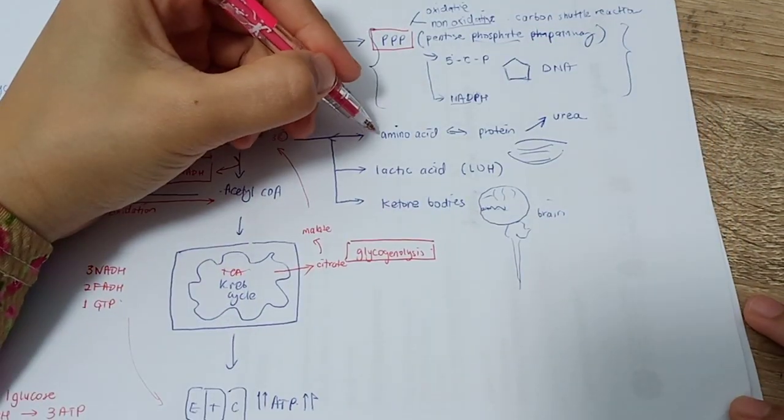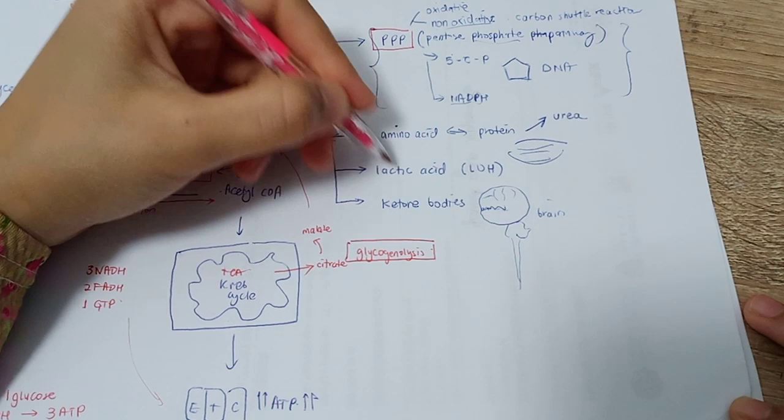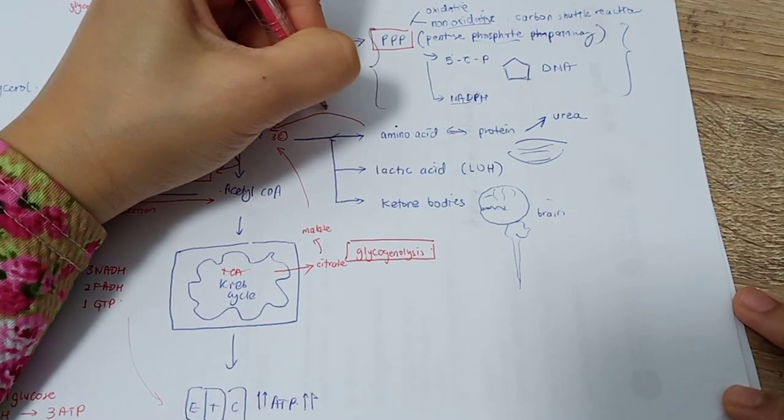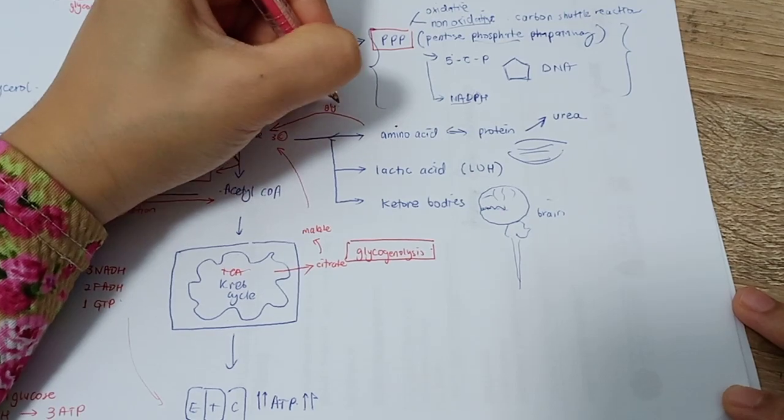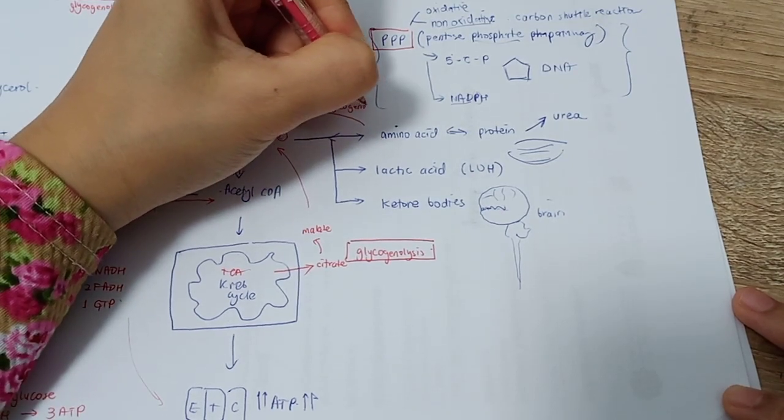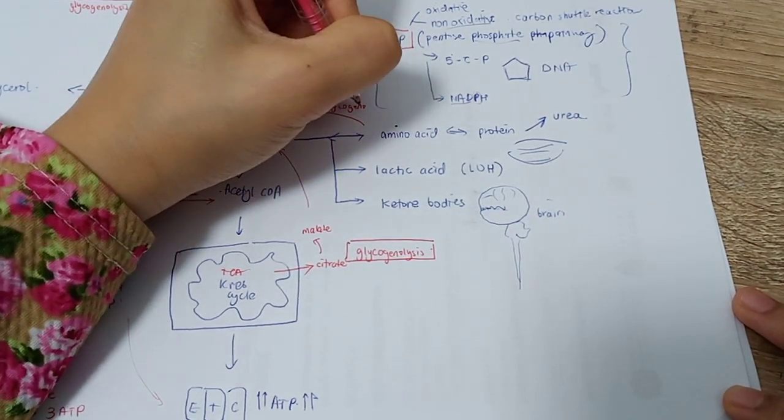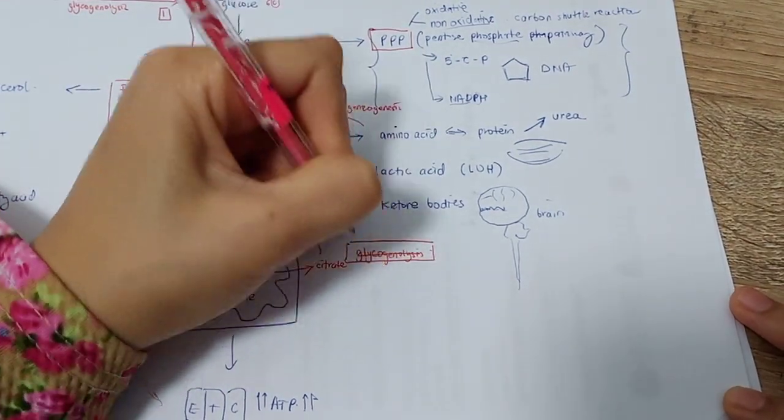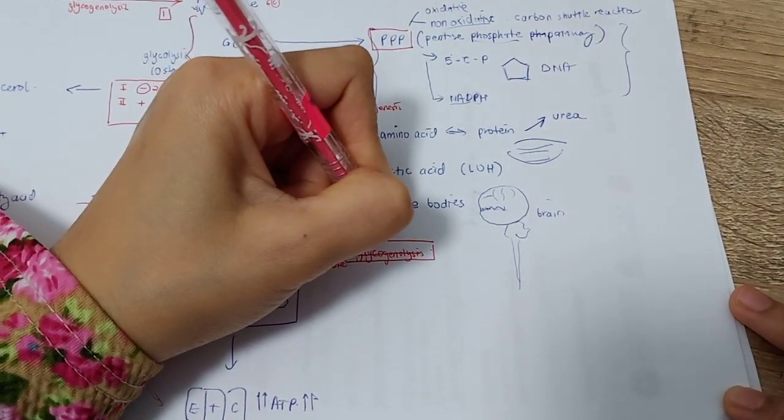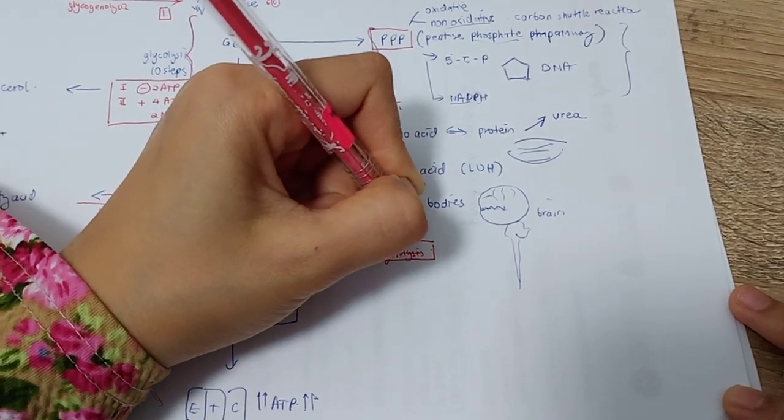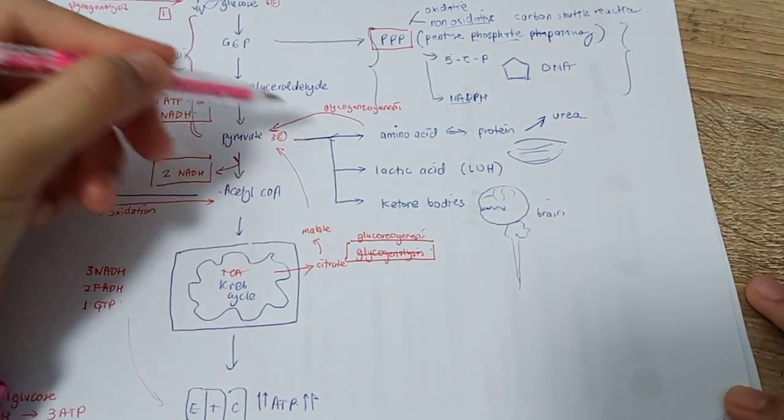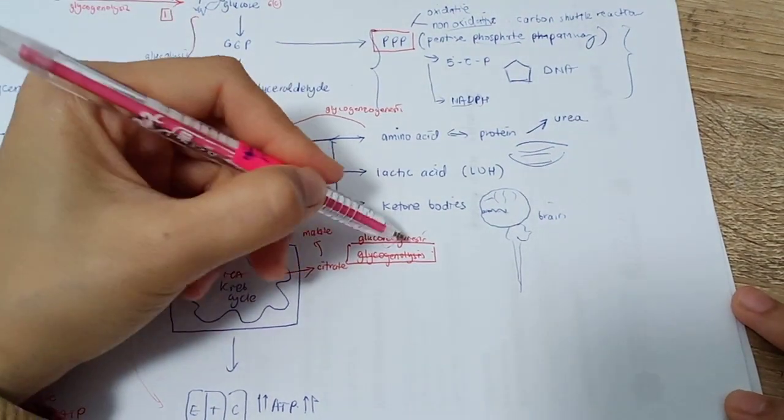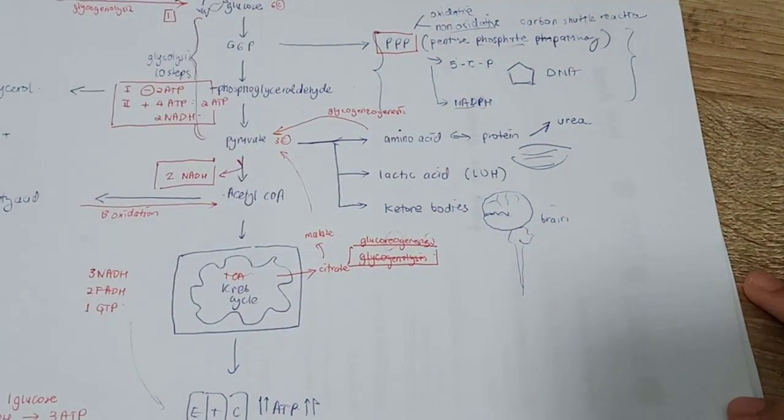All this form of amino acid and lactate, if converted back into pyruvate, is also called gluconeogenesis. Basically, it's the formation of glucose from a non-carbohydrate origin.